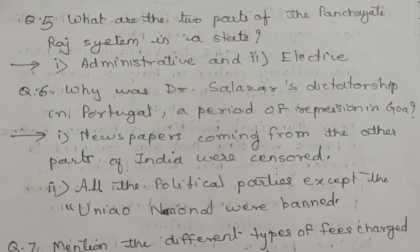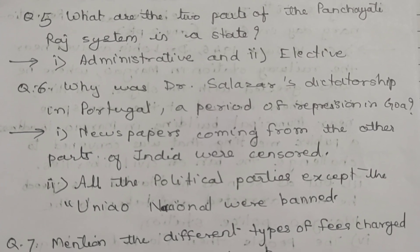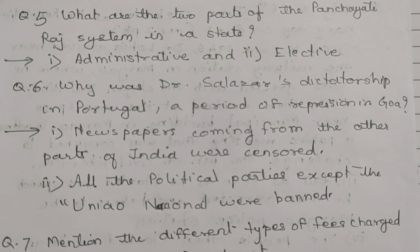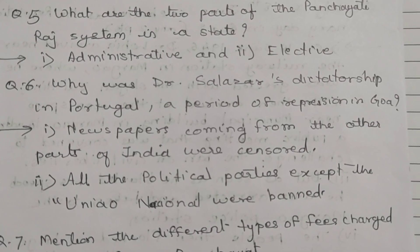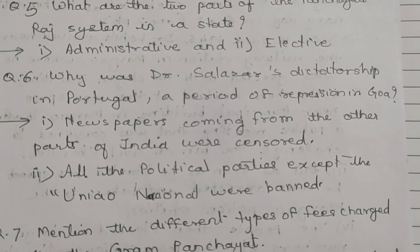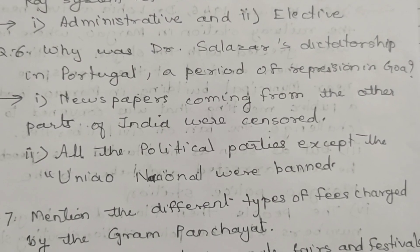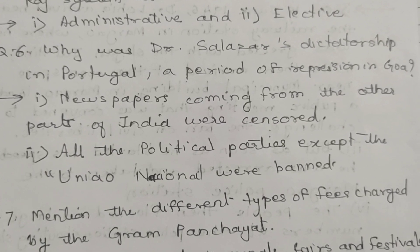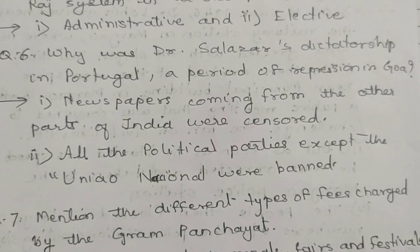Question number 5: What are the two parts of the Panchayati Raj system in a state? The two parts are administrative and elective. Question number 6: Why was Dr. Salazar's dictatorship in Portugal a period of repression in Goa? First, newspapers coming from other parts of India were censored. Second, all political parties except the União Nacional were banned. Students, you can write any two points for this question.